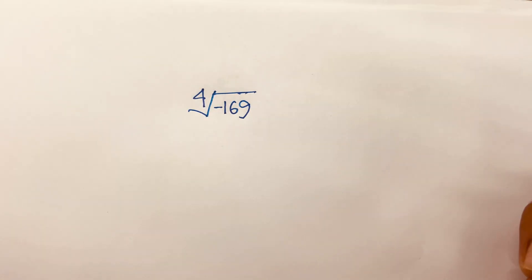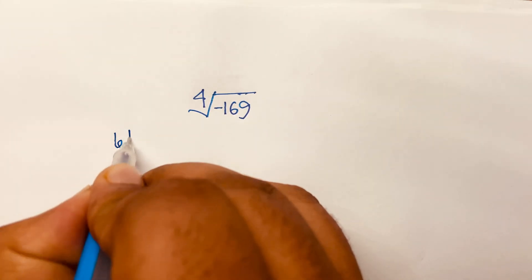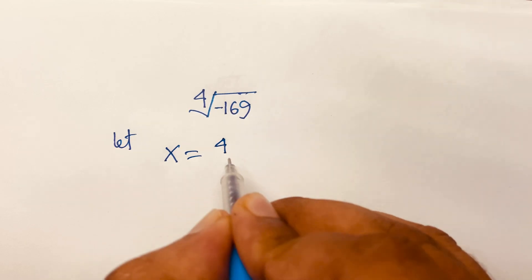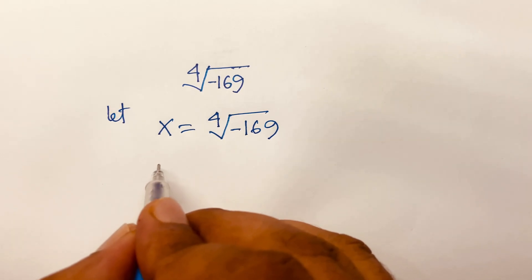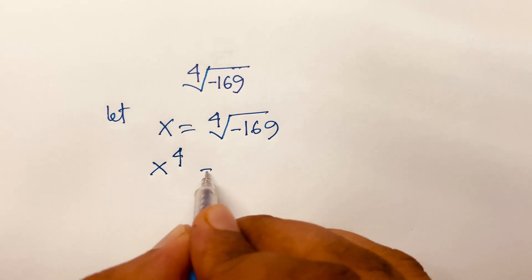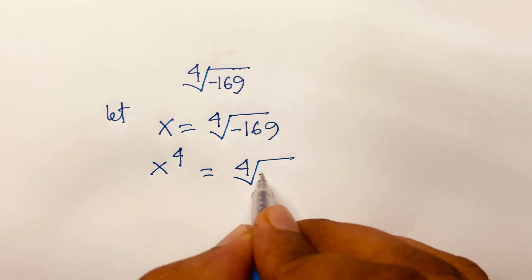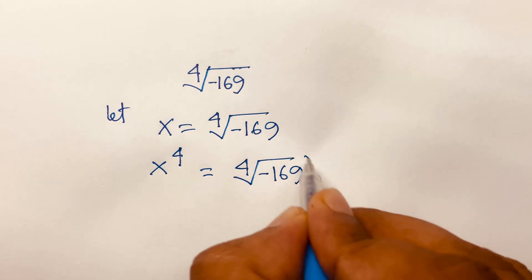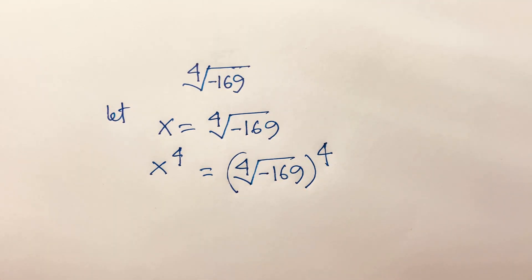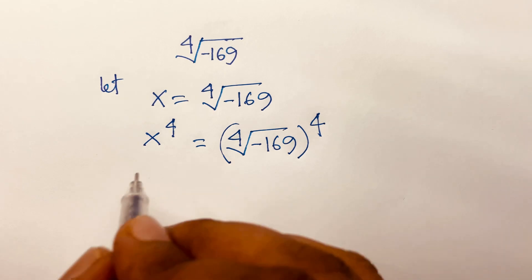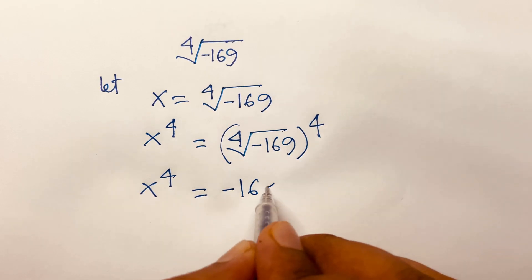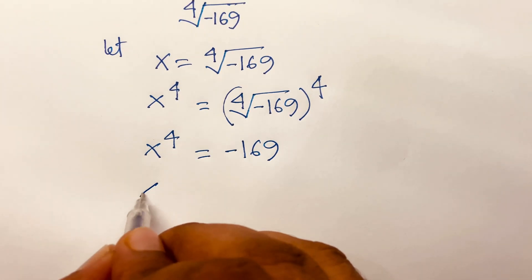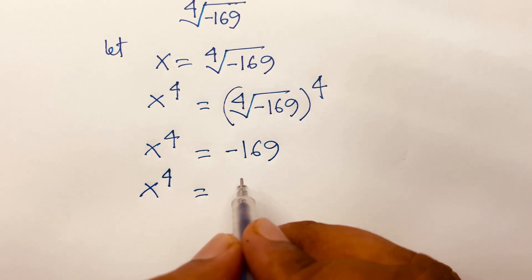How to solve the 4th root of minus 169. First of all, let x equal to the 4th root of minus 169. Then it will be x to the power 4 is equal to the 4th root of minus 169, bracket to the power 4. I just use both sides to the power 4. Then this equation becomes x to the power 4 is equal to minus 169.